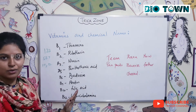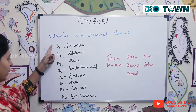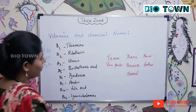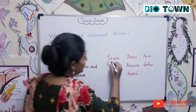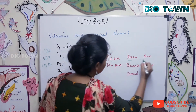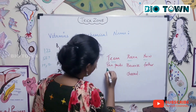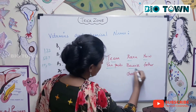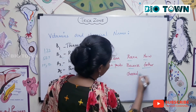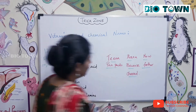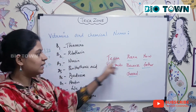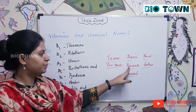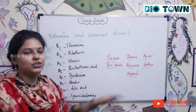To remember the order, use this mnemonic: 'Tina Reena Now Pan Packs Because Father Cheer.' Each word corresponds to a vitamin's chemical name in sequence.